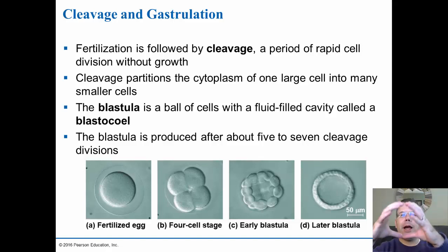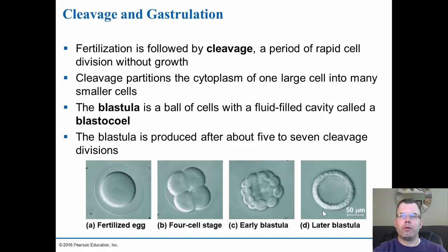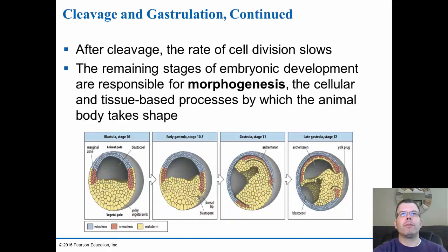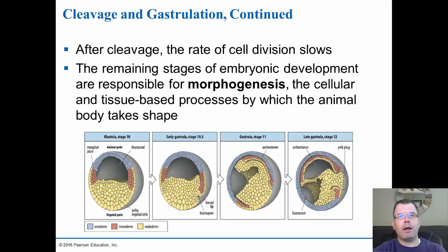After cleavage, the rate of cell division slows, and now you start to get morphogenesis. You have the blastula, and you start to see development of different types of tissues. The top part is known as the ectoderm, which will form the nervous system. The inner cells — labeled red — are the mesoderm, which will develop into many of the intermediate tissues inside. Then you have the vegetal pole — the yolky cells or endoderm — which turns into the digestive cavity. During blastula formation, you start to see this pushing in, called the blastopore, where cells start to invaginate inward.